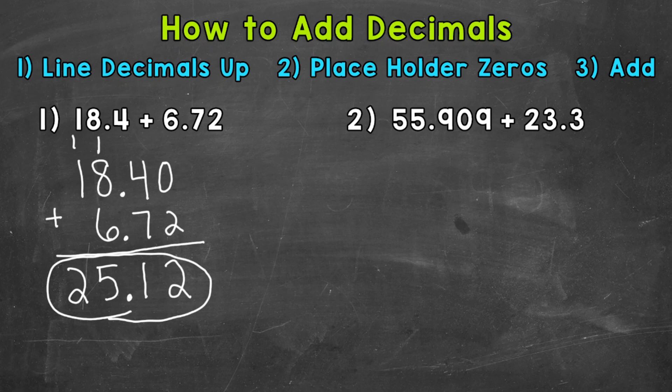Now before I move on to number 2, I do want to mention a common mistake. And that's going to be lining the digits up. Meaning, for number 1, it would look like this. 18 and 4 tenths plus 6 and 72 hundredths. So 3 digits lined up with 3 digits. So you can see that the decimals are not lined up.